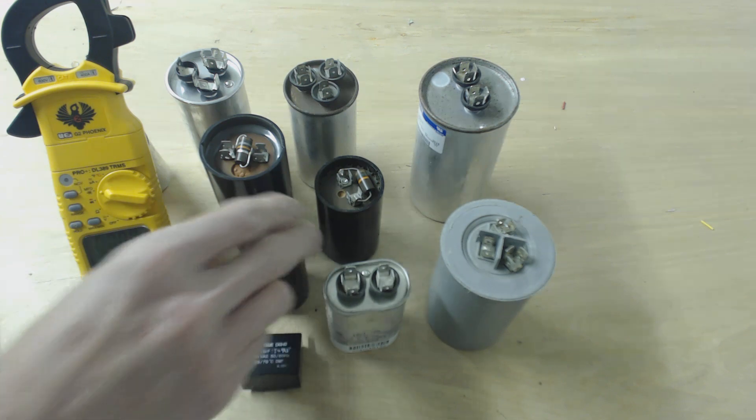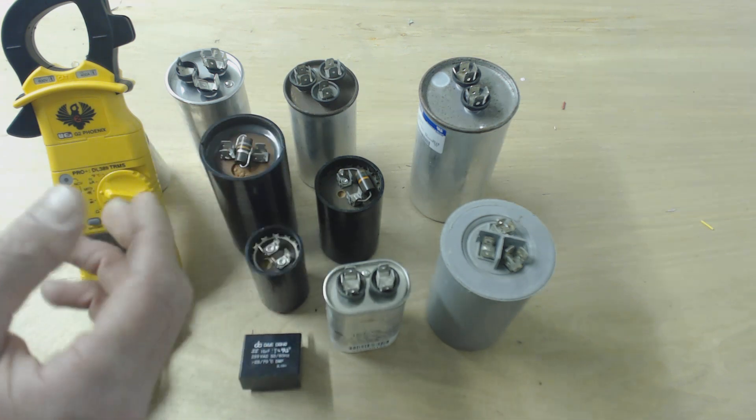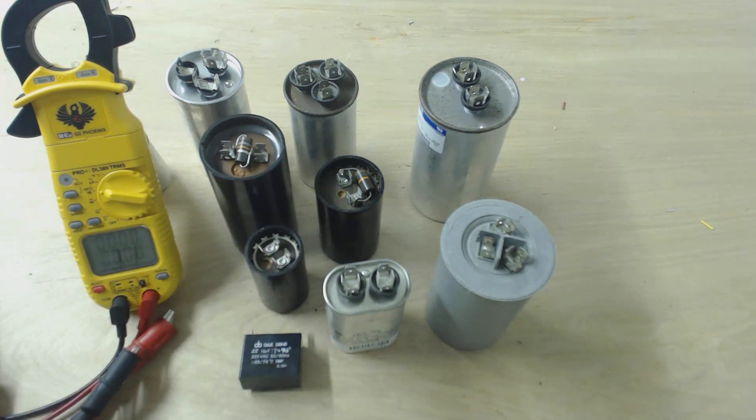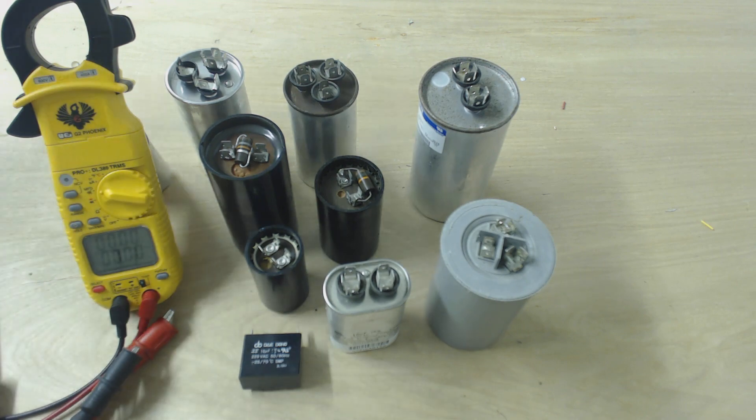The black ones, which are start capacitors, usually have a higher microfarad reading, and they're also usually hooked up to a relay of some sort that would kick it out.